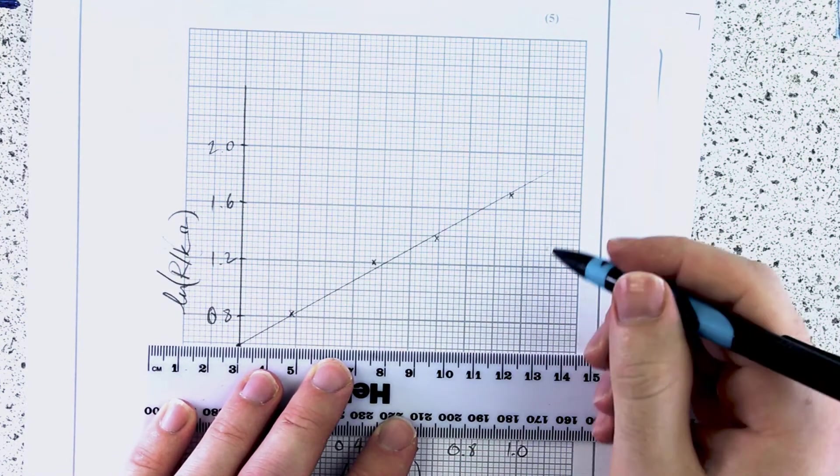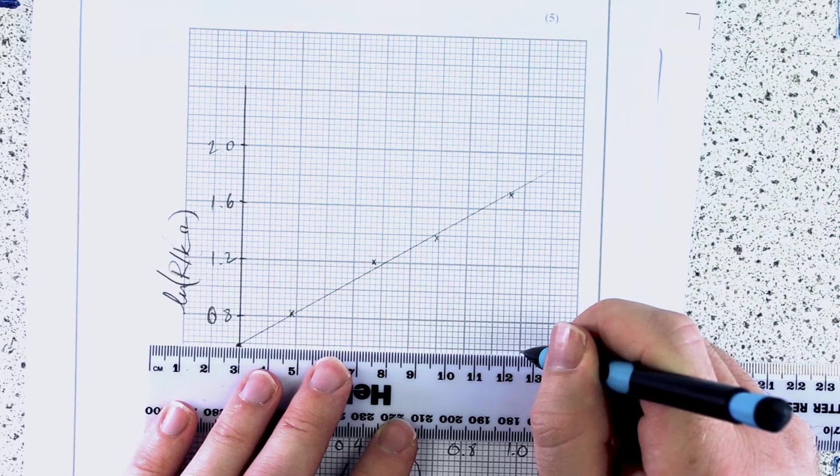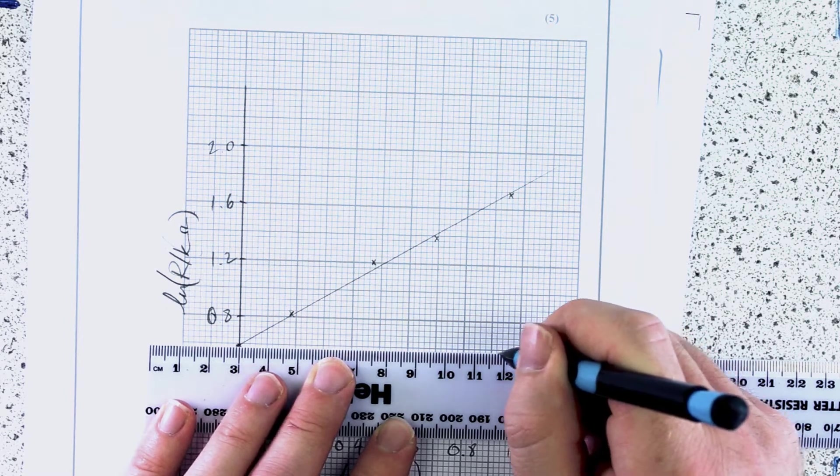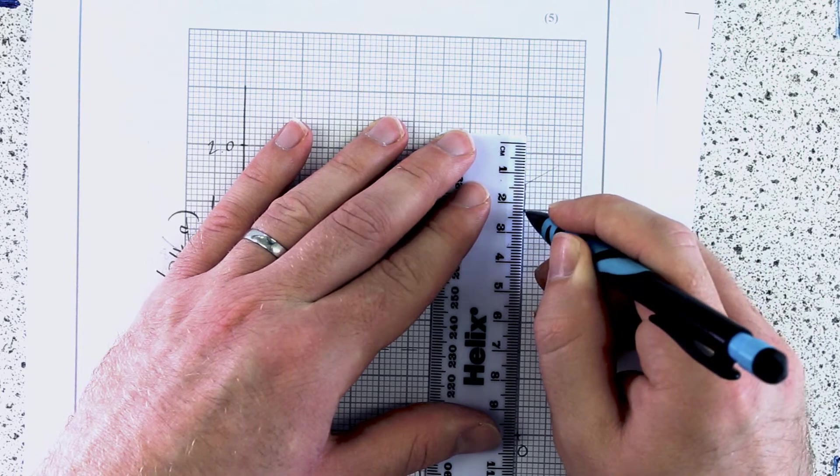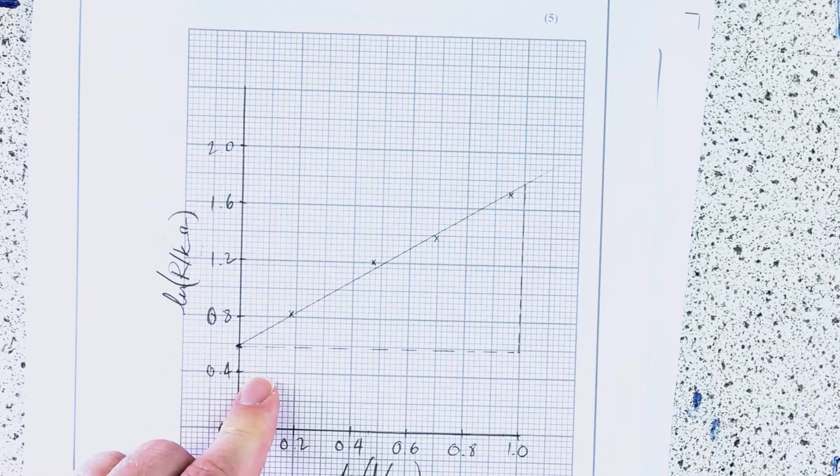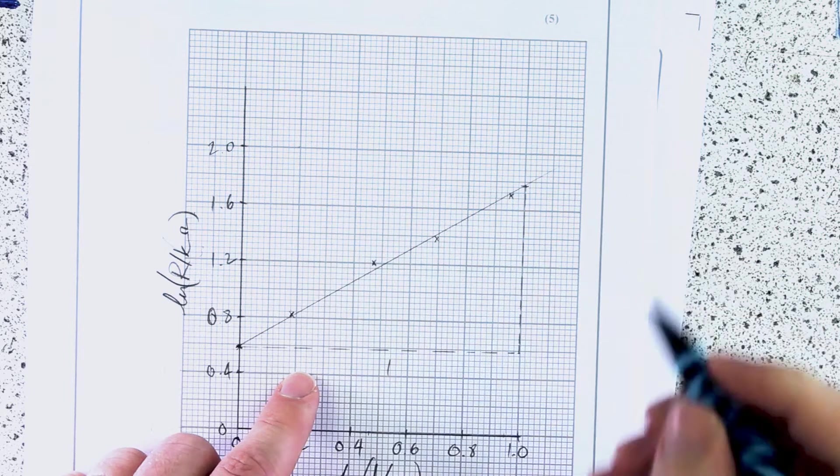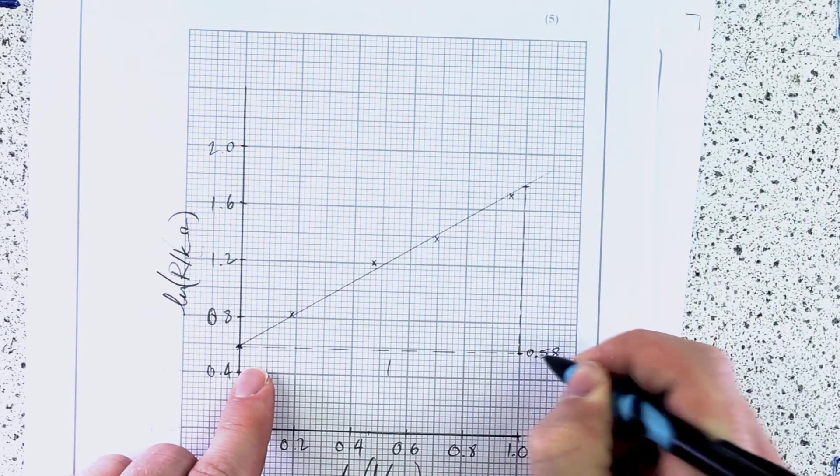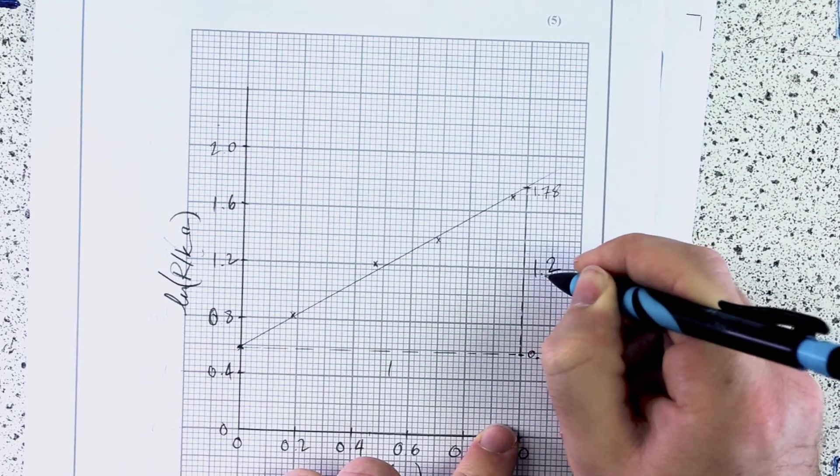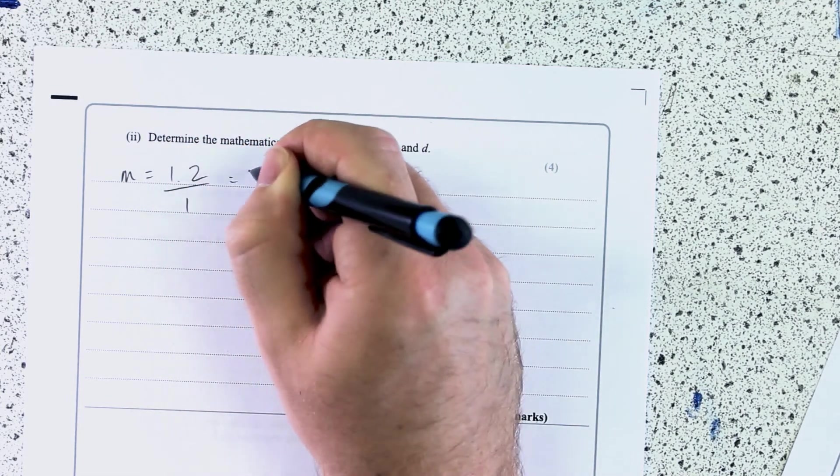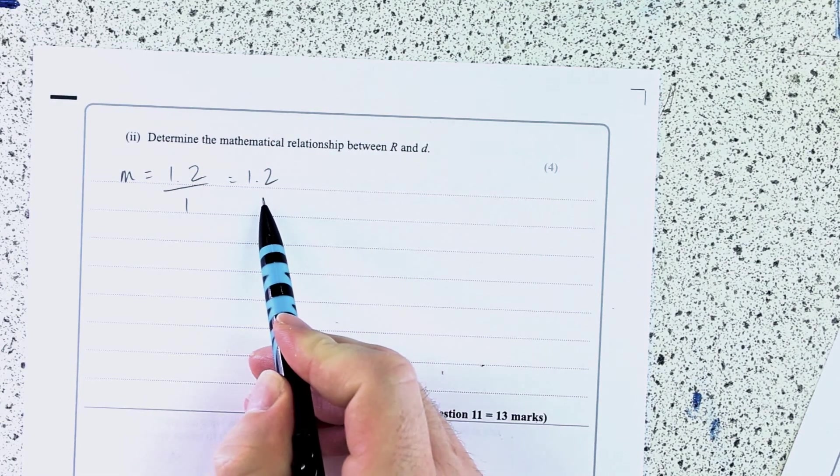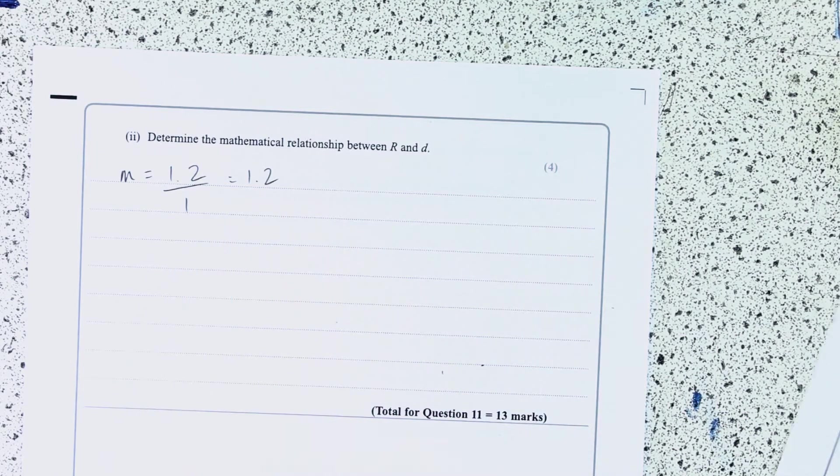Determine the mathematical relationship between R and D. So in other words, that is find yourself a gradient. And firstly, whenever you're doing gradients, use the largest triangle that you can fit on the range of the graph. And use the line, not the point. And if you use a sensible number like that, so your DX is 1, then it should be a lot easier to calculate a gradient. The gradient won't have a unit because it's log-log.